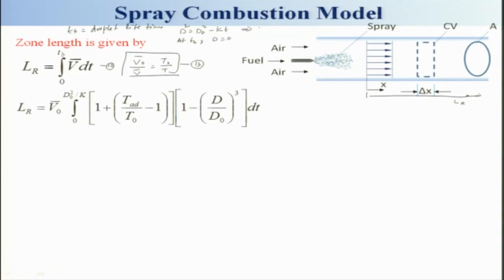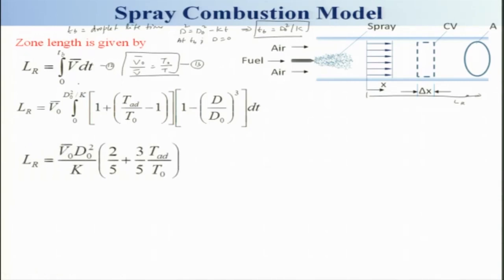At t = t_v, d = 0, so from d² = d₀² − K·t_v, we get t_v = d₀²/K. Integrating, the zone length L_r is found to depend on the initial average velocity, the mixture temperature, the initial droplet diameter squared, and the ratio of adiabatic flame temperature to inlet temperature.